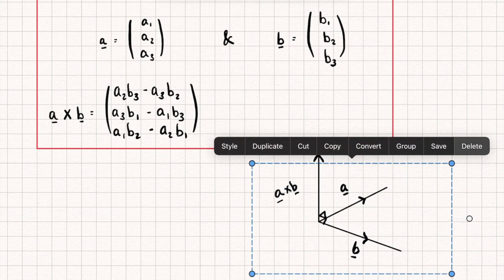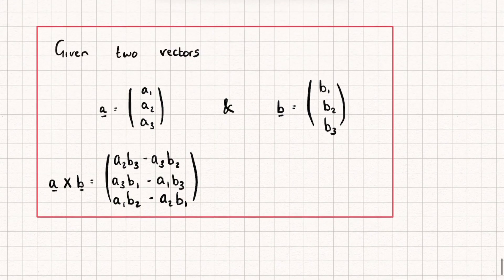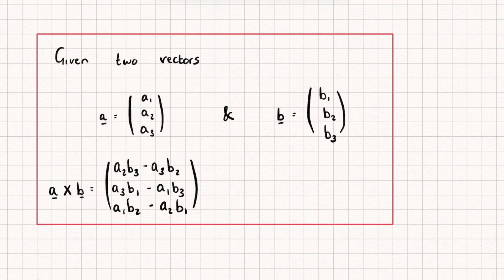So how can we show that this new vector a cross b is perpendicular to both? Well, we could take vector a and dot it with a cross b. And if it equals zero, it's therefore perpendicular to it. We could then do the same thing with vector b, showing b dot a cross b also equals zero. So that's what we're going to do.